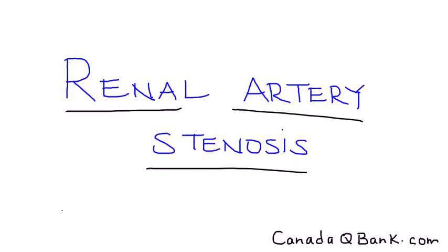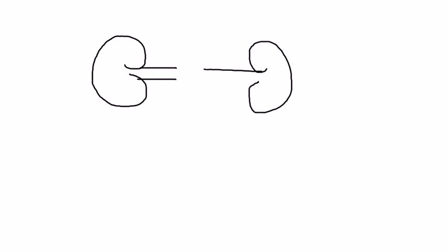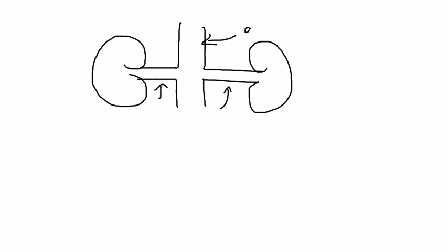Renal artery stenosis. What exactly are renal arteries? Going out to each of the kidneys is an artery that branches off the aorta. So these two are the renal arteries and this is the aorta.